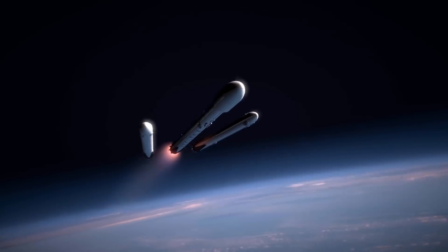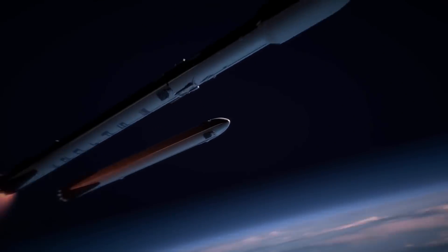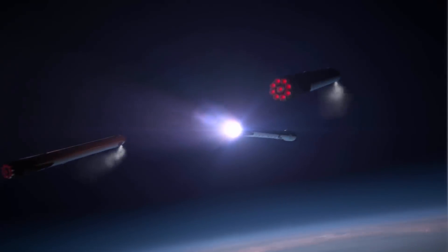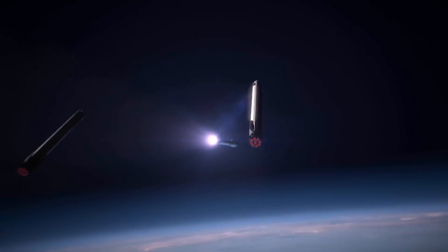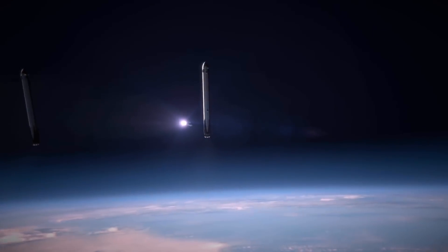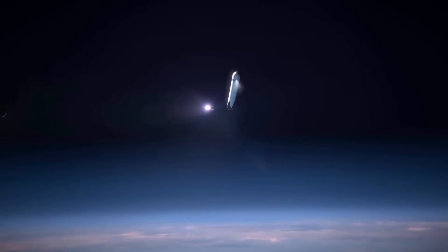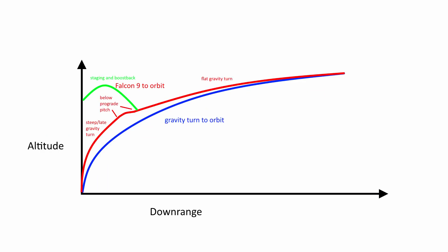Anyway, I hope you enjoyed this little explanation. Maybe you better understand now why the Falcon 9 launches — especially the ones landing back at Cape Canaveral — and the flight animations tend to look a little bit weird if you're used to other rocket launches, or why the Space Shuttle launched so relatively flat compared to other rockets. As always, thanks for watching.